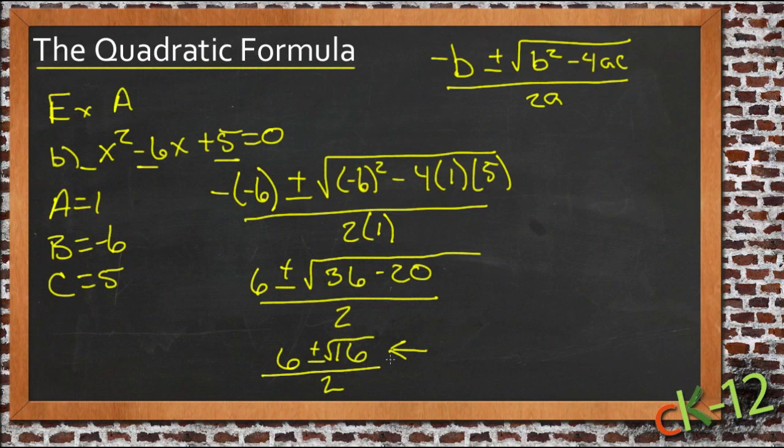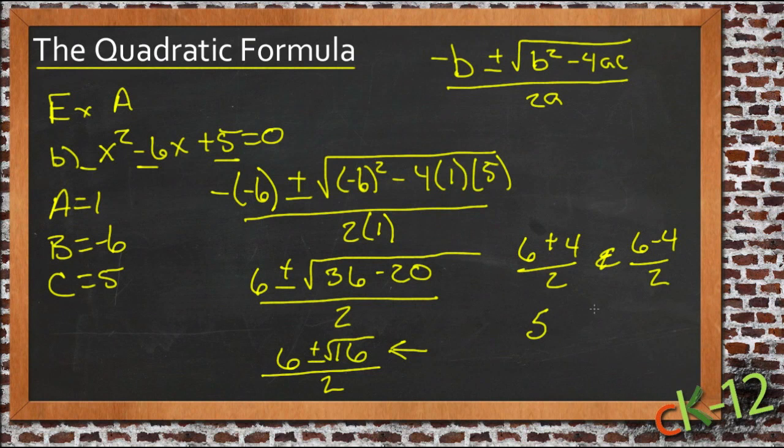So at this point, our answer splits, and we get 6 plus 4 over 2, and we get 6 minus 4 over 2. So we have 10 over 2, which is 5, and we have 2 over 2, which is 1. So our two answers then are 5 and 1.